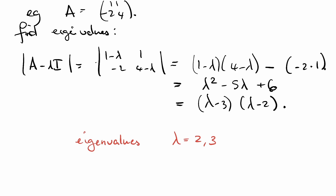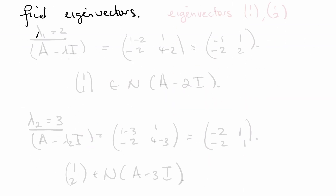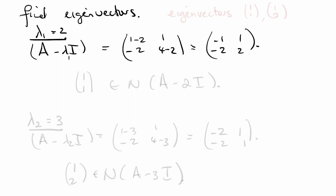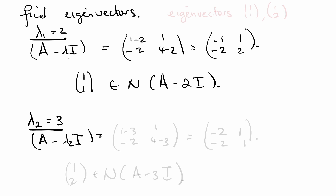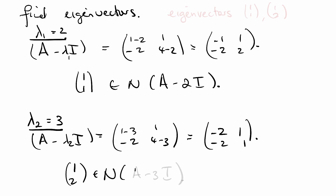Step 2: find the eigenvectors. For lambda 1 equal to 2, we look at A minus 2I, which gives [-1, 1; -2, 2]. The eigenvectors are in the null space of this matrix, and [1, 1] is in the null space of A minus 2I. Similarly, for lambda 2 equal to 3, we look at A minus 3I, which is [-2, 1; -2, 1]. And [1, 2] is in the null space of A minus 3I. So altogether, we've got eigenvectors [1, 1] and [1, 2].